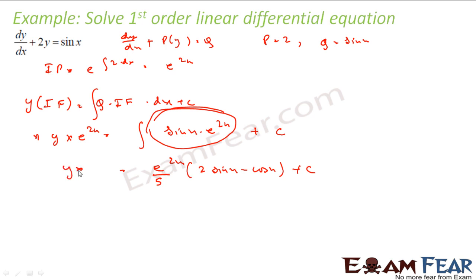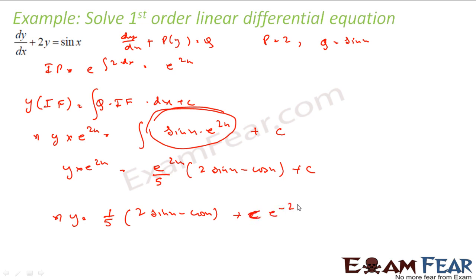My solution is: y equals (1/5)(2 sin x minus cos x) plus c times e to the power minus 2x — and that is the answer. Here in this question the integration is the lengthy part, so I am not solving it here because in this chapter we are not concerned about learning how to integrate sin x times e to the power 2x. That is covered in the integral chapter. Here we are more interested in finding the solution of the differential equation.